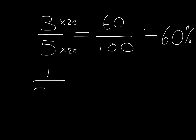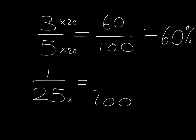Try for yourself: what is one over twenty-five written as a percentage? Pause the video and check that you can do this. You should immediately know you want it as a fraction over a hundred. You multiply 25 by four to get to a hundred, so you must do the same to the top: one times four gives four over a hundred. So one over twenty-five is the same as 4 percent.